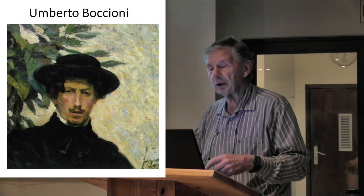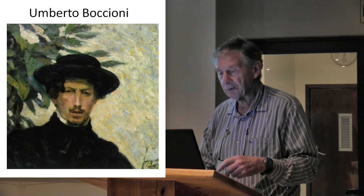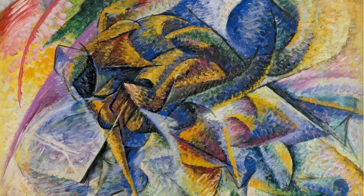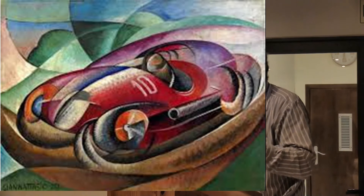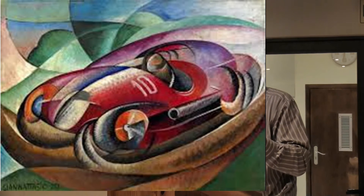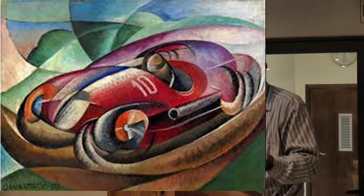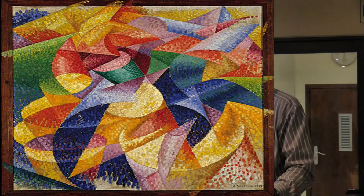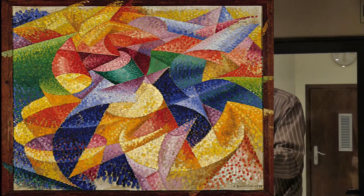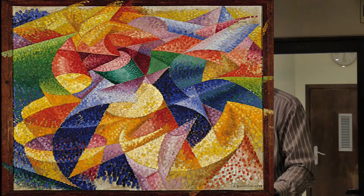This was Umberto Boccioni — an interesting-looking character. Here we can see the art: this is called The Cyclist, one of his paintings. This is the racing car — you can see the whole idea is speed, motors of all kinds. Another one — very action-packed. You can just look at this painting and see action.